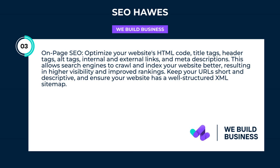On-page SEO: optimize your website's HTML code, title tags, header tags, alt tags, internal and external links, and meta descriptions. This allows search engines to crawl and index your website better, resulting in higher visibility and improved rankings.